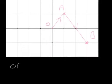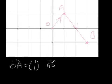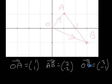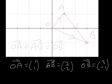If we look at the vector OA, that's 1 along and 1 up. The vector AB is 2 along and 2 down. The vector OB is 3 along and 1 down. So if we add vectors OA and AB: 1 plus 2 is 3, and 1 plus minus 2 is minus 1 — so OA plus AB equals OB. To go from O to B, we could go directly, or go via A. This plus this: OA plus AB has the same effect as OB.